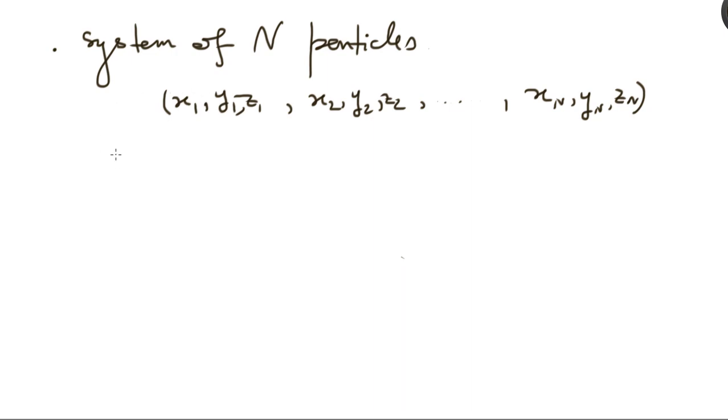So, you see there are three for each of them and there are total of n. So, clearly this system needs three n numbers to be specified, to uniquely tell where all the particles are located and this is what the degrees of freedom, this system has. So, this has three n degrees of freedom.